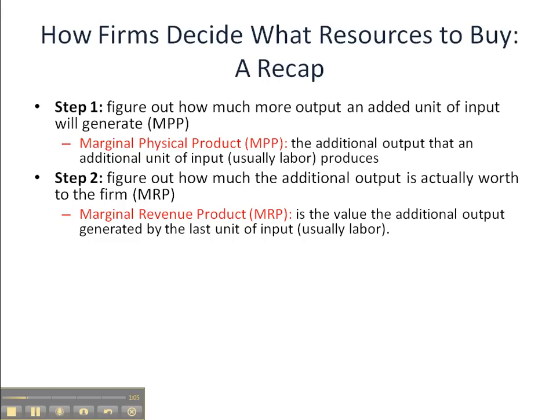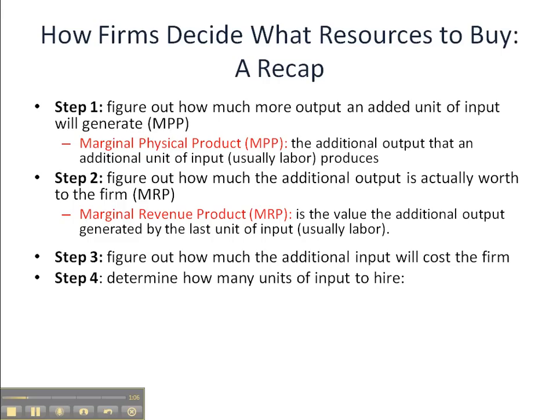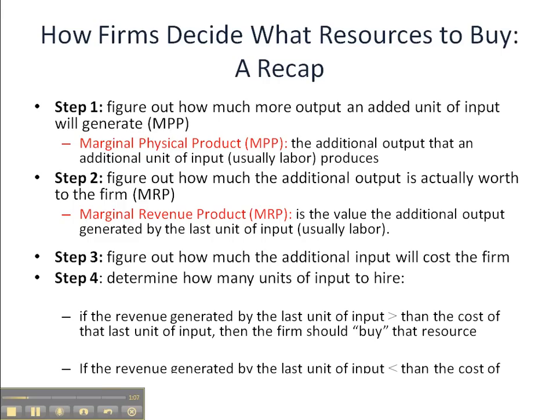In this video, we're going to take a look at steps three and four. For step three, we're going to figure out exactly how much the additional input will cost the firm. We've figured out how much revenue it will generate — now we have to figure out how much each additional unit of input is going to cost.